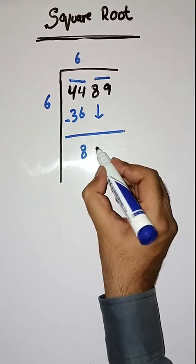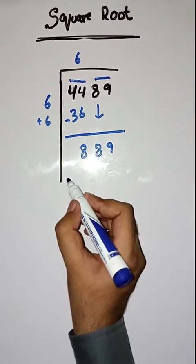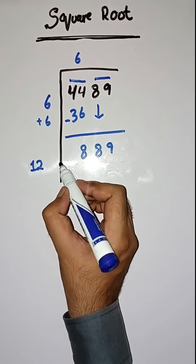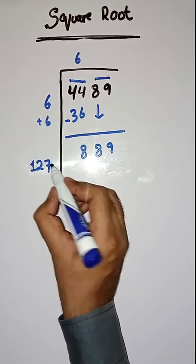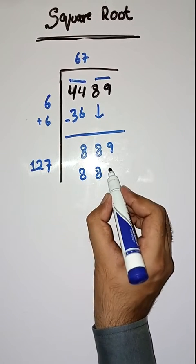Next pair is 89. We will take it down. Here we will do 6 plus 6, which is equal to 12. Now we will take a number 7. 127 times 7 are 889.